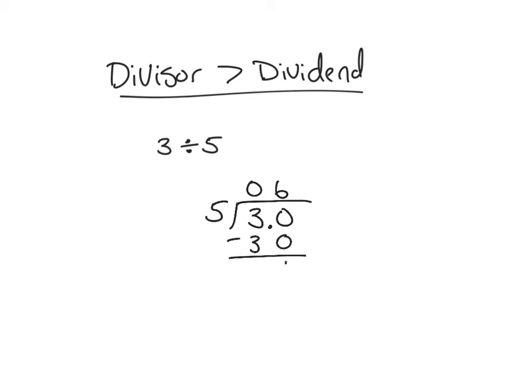Now we do have to be careful because our answer is not 6. 5 doesn't go into 3 six times. It does however go into 3 six tenths of a time. 5 does in fact go into 3 six tenths of a time. So our answer is six tenths.